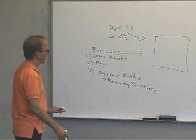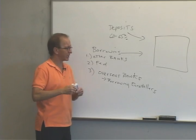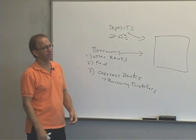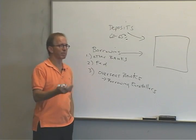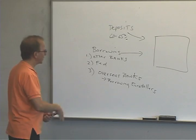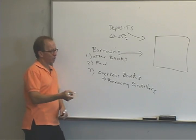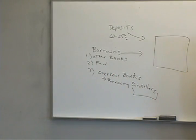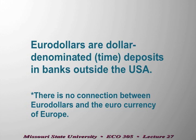I want to talk about eurodollars a little bit. Dollars find their way overseas — for example, we might purchase something from a manufacturer in Germany, and the German manufacturer may accept dollars in payment for goods and services. Here's what a eurodollar is: it is a dollar-denominated bank deposit in a bank outside the U.S.